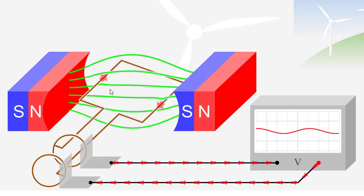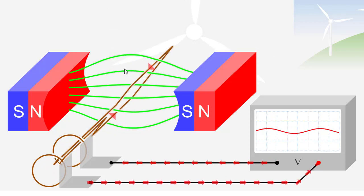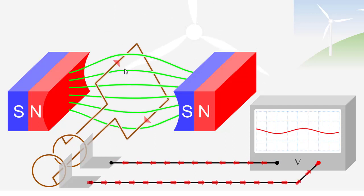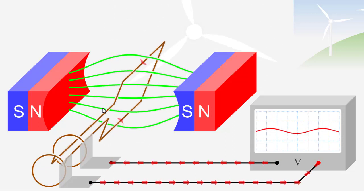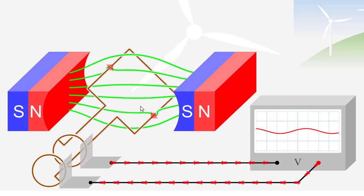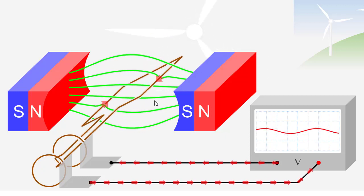This is the simplest type of alternator. It is called a single turn or single loop alternator. In the construction, as we can see, it consists of a single turn, and this loop is made from conductor.